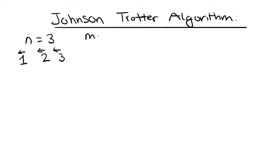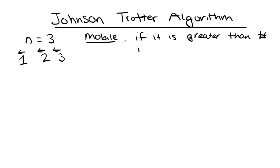Each number is mobile if it is greater than the number it is pointed to. So 3 is a mobile number because it's pointing to 2, and 2 is a mobile number because it points to 1, but 1 is not a mobile number because it's not pointing to anything. So we have 3 and 2 as mobile numbers. We then want to find the greatest mobile number in the Johnson-Trotter algorithm.